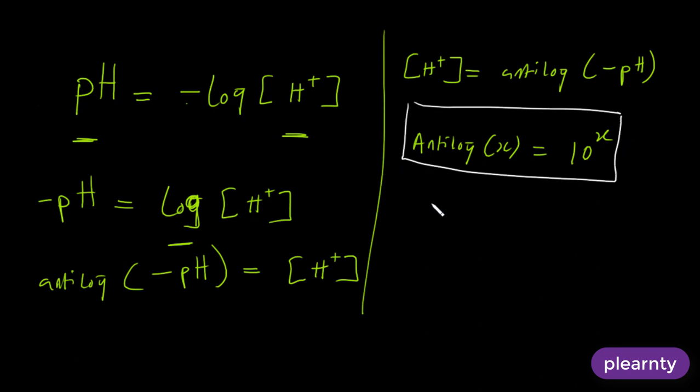So using this, we can say hydrogen ion concentration is equal to 10 raised to power minus pH. And this will be the formula we'll be using for any question that asks us to find hydrogen ion concentration from pH. Now let's take some questions.